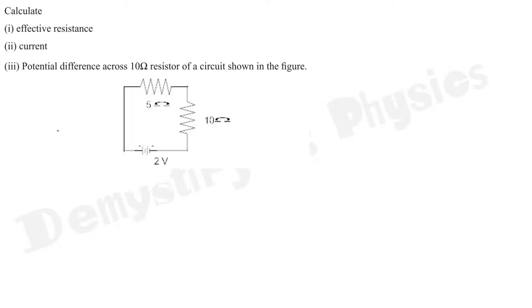Calculate effective resistance, current, and potential difference across 10 ohm resistor. You can see that the two resistors are in series combination. When one end of each resistance is connected to each other, then we say they are in series. If there is something in between them, then they are not in series. Since nothing is between the 5 ohm and 10 ohm resistors, they are in series combination.